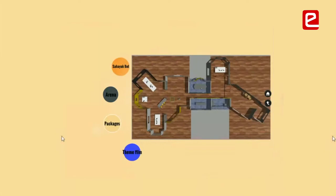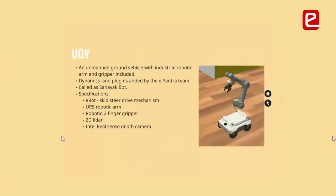The simulation environment basically consists of a robot model and the simulator world. This robot model is an unmanned ground vehicle with an industrial robotic arm attached, along with a gripper and various sensors. The entire dynamics and plugins were added by the E-Yantra team and provided to the participants.